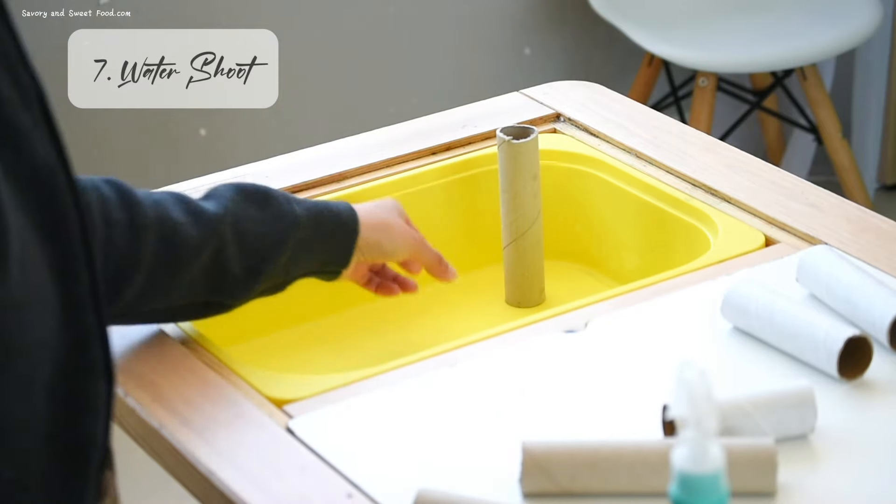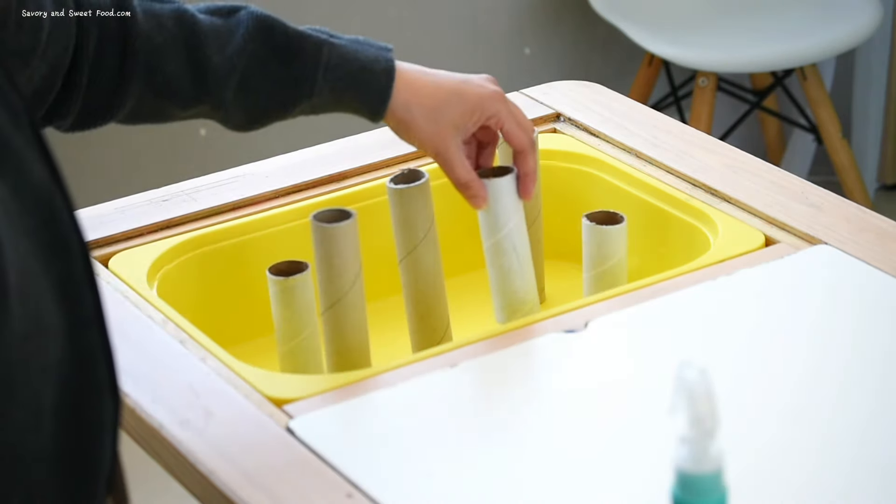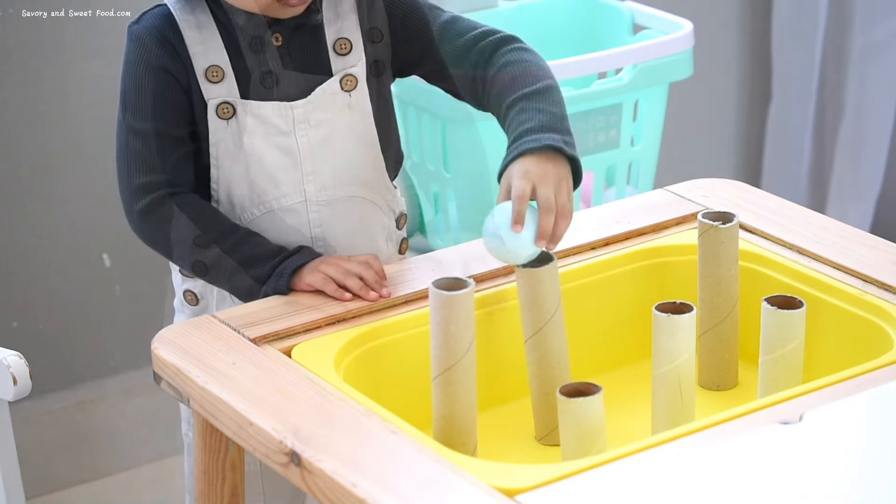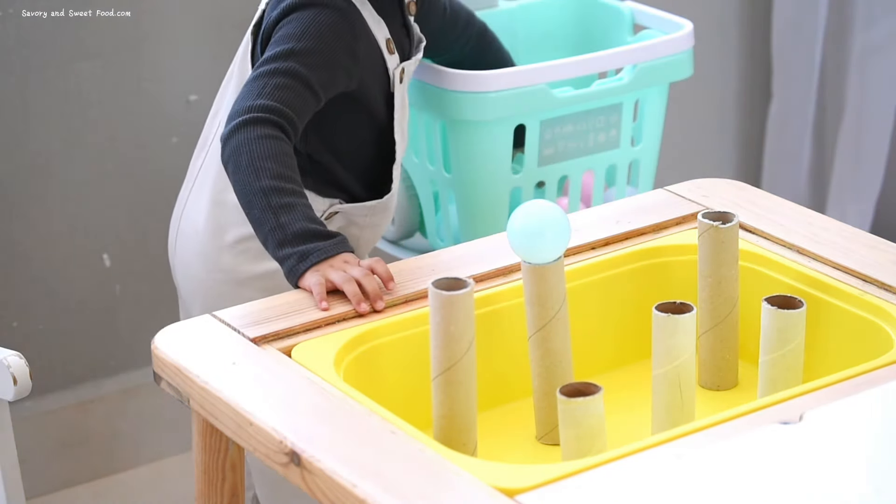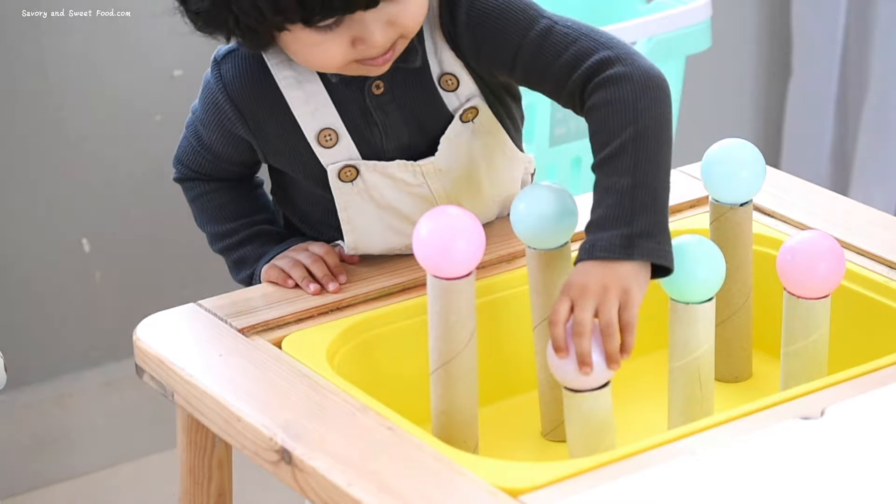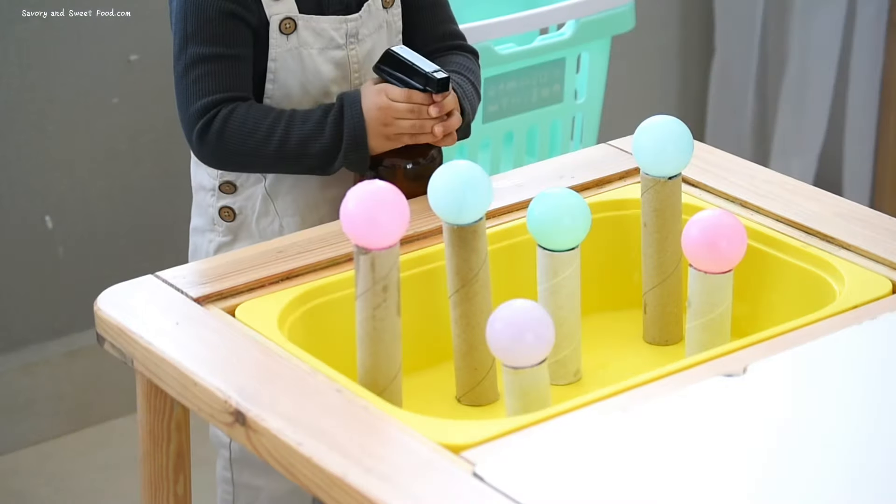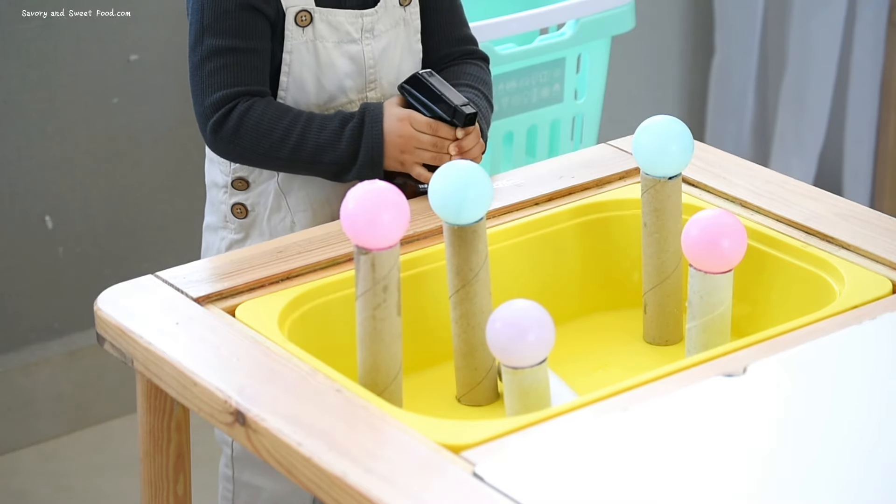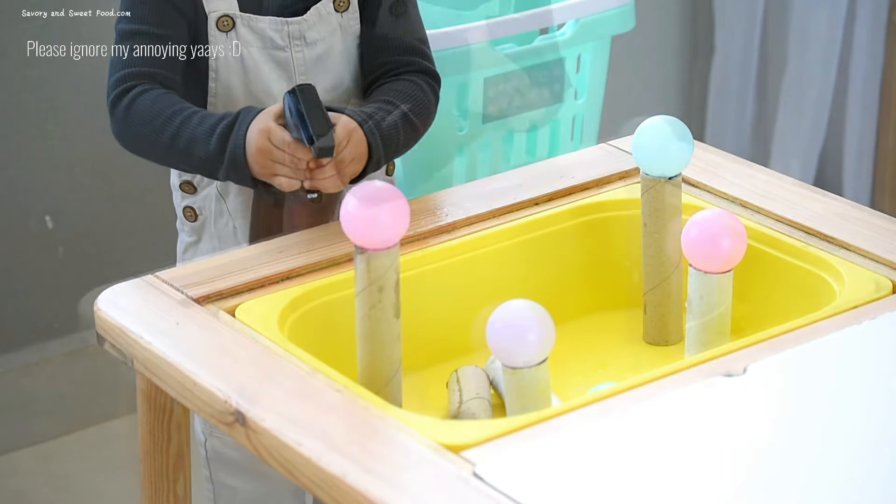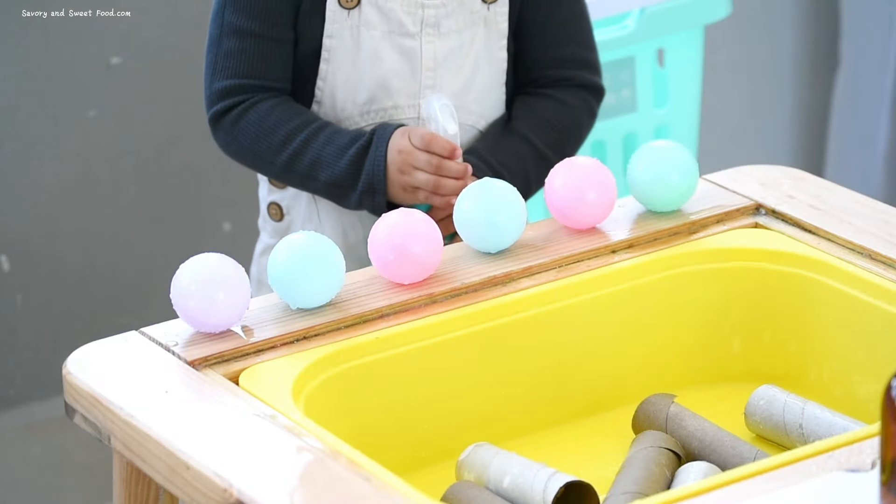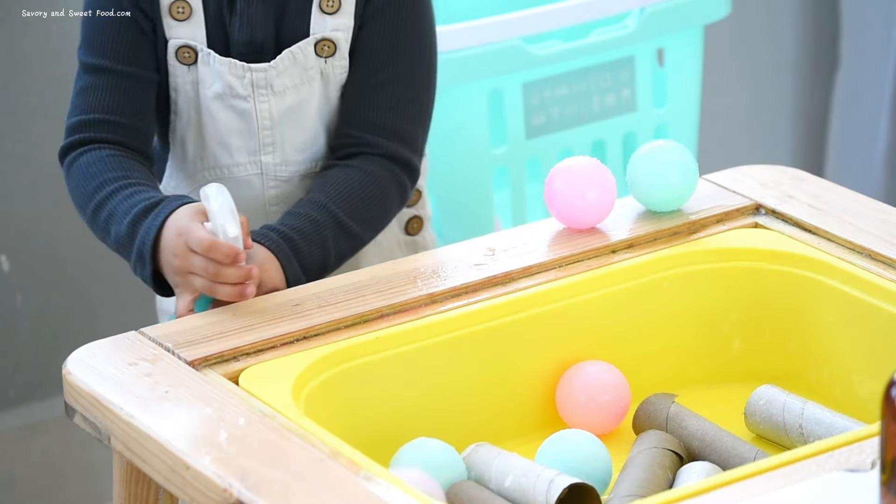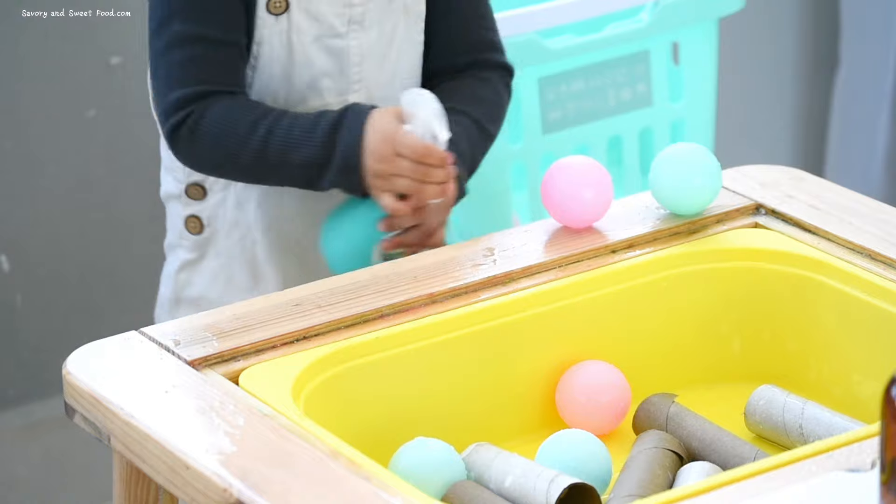Coming up is a water shoot activity. For this, I set up kitchen tissue rolls on the table, cutting them in different lengths. I then asked Omar to keep the ball on top of each tissue paper roll. Armed with a water spray gun, Omar's mission was to shoot and knock down the balls. This was a very fun activity—even I enjoyed doing this. This activity really kept Omar engaged for a long time.